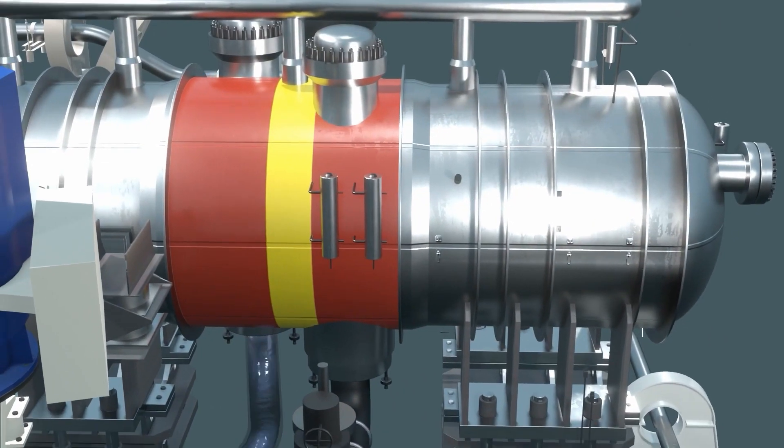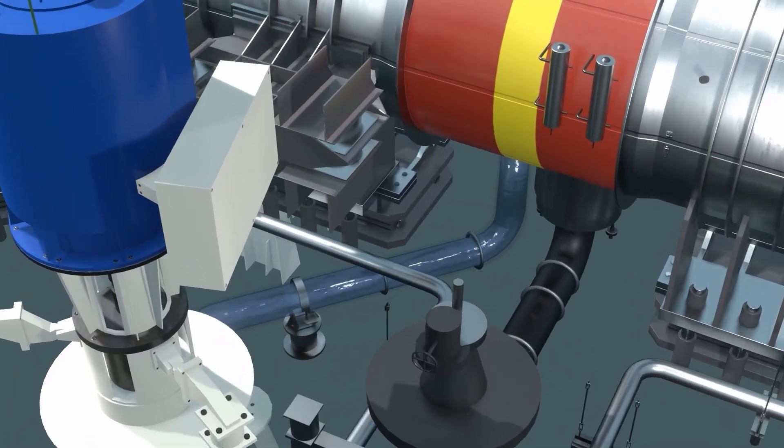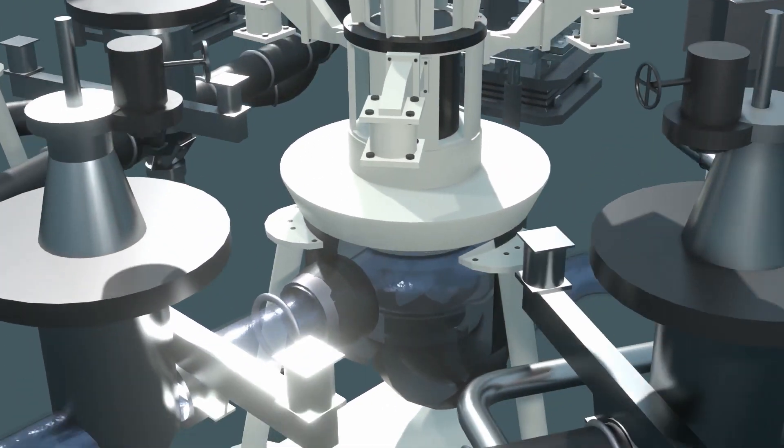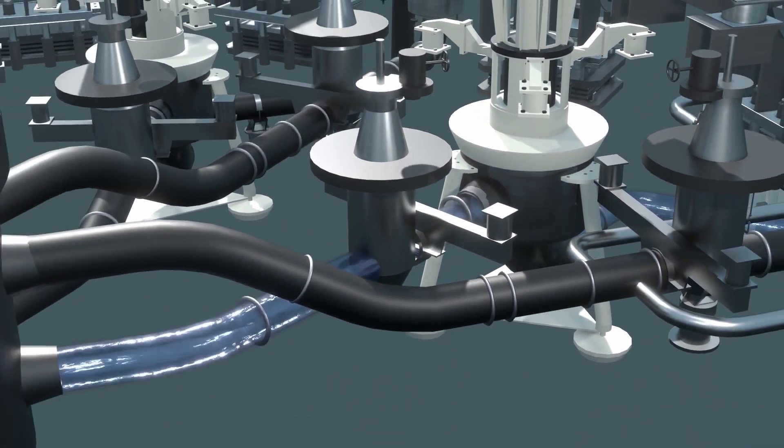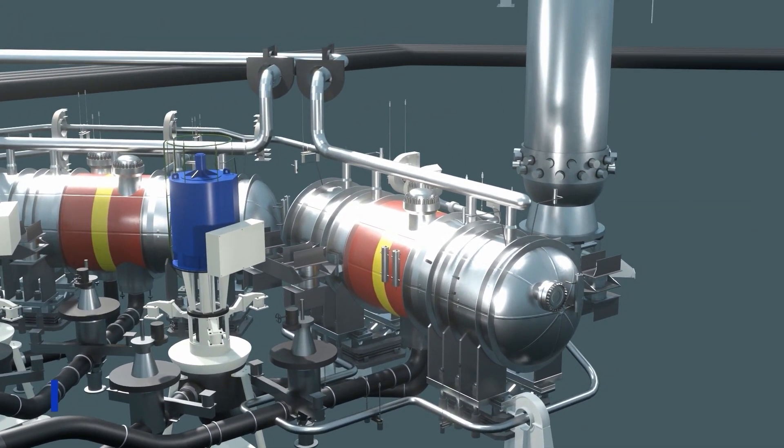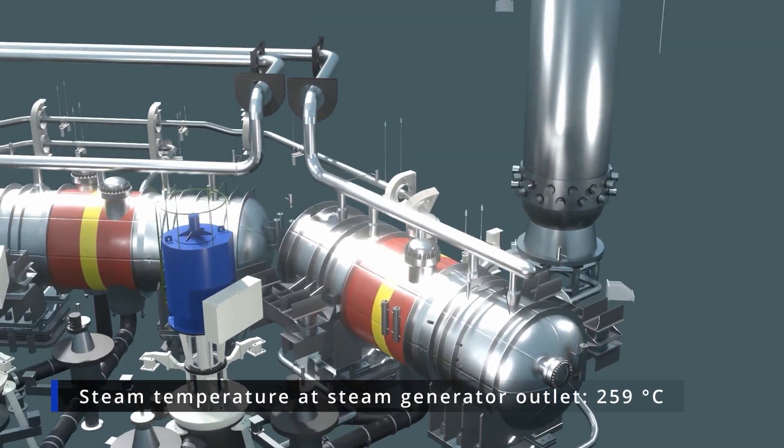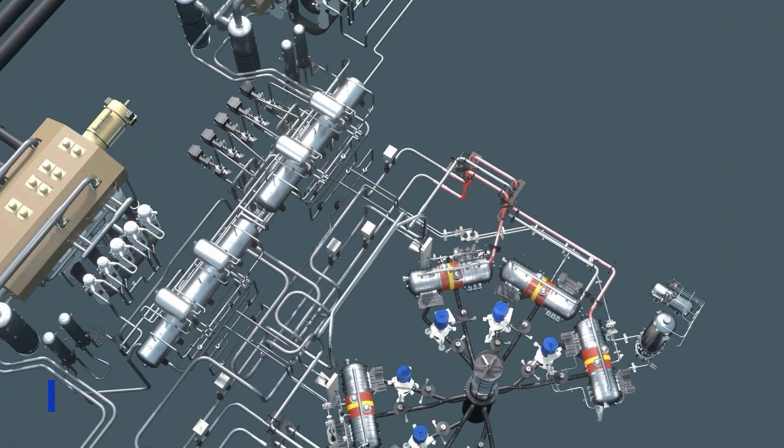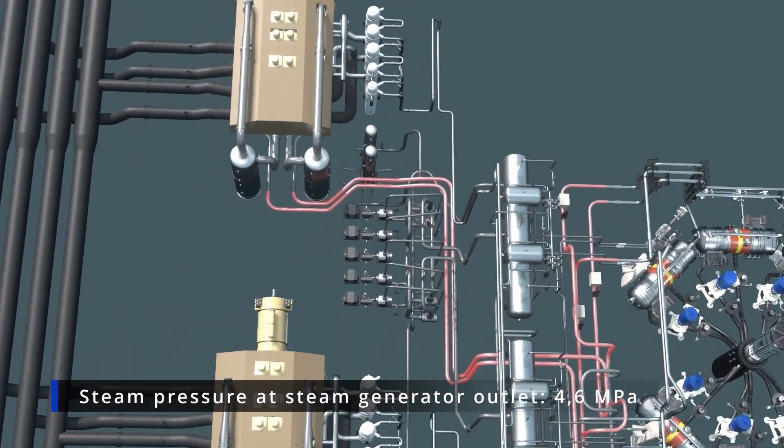The primary circuit water has done its job and is returned from the steam generator tubes back to the reactor via the cold branch of the main circulation loop. Meanwhile, in the secondary circuit, the water in contact with the hot water tubes has turned into high-pressure steam. It reaches the turbine via the steam line and the main steam header.